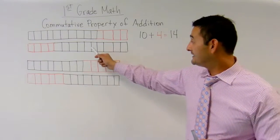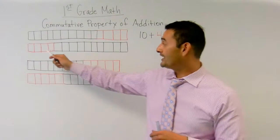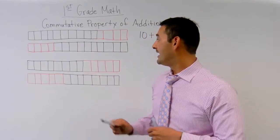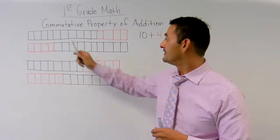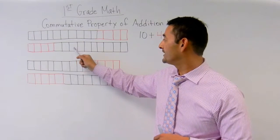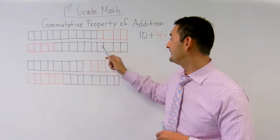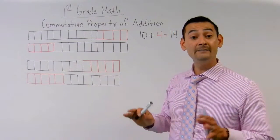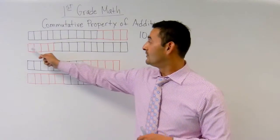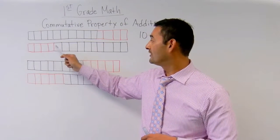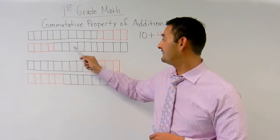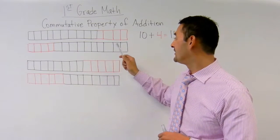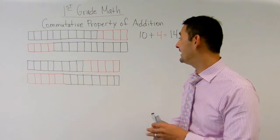Now let's take a look at this next piece here. How many red boxes do we have? One, two, three, four. How many black boxes do we have? One, two, three, four, five, six, seven, eight, nine, ten. Awesome. How many boxes do we have in all? One through fourteen — we have fourteen boxes. Awesome.